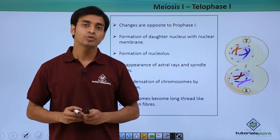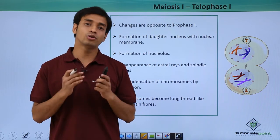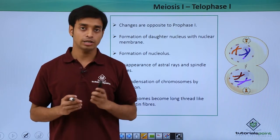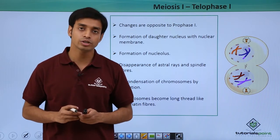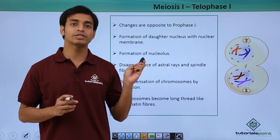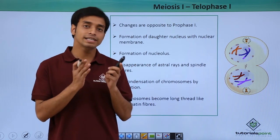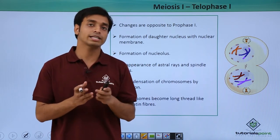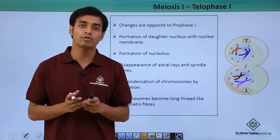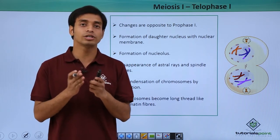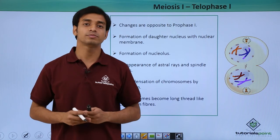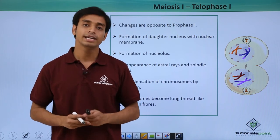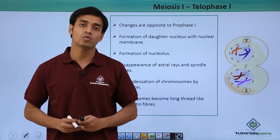So in this video we have talked about the fourth phase of meiosis 1, which is telophase 1. We have seen that the activities the cell is performing are absolutely the reverse of the activities performed by the cell in prophase 1.